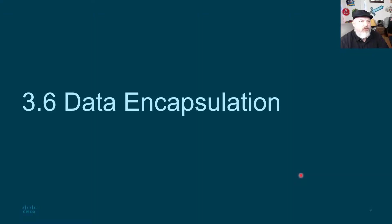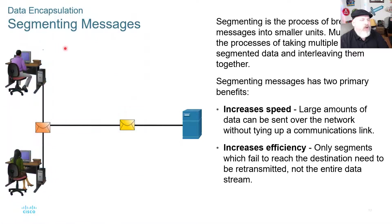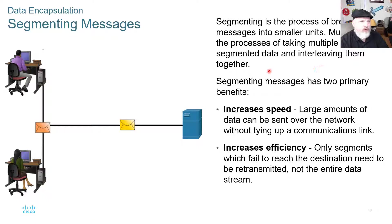Data encapsulation. We have to segment messages on the network to make sure they go through properly. Segmenting is the process of breaking up messages into smaller units. Multiplexing is the process of taking multiple streams of segmented data and interleaving them — putting them together through the network. Those are two terms you need to know for this course: segmenting and multiplexing.